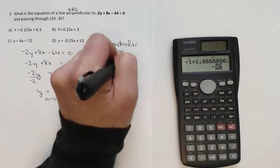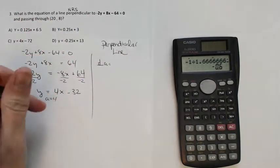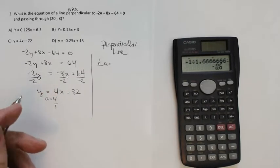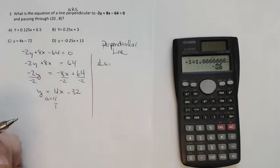Perpendicular slope will be equal to the negative reciprocal. Flip it, put it over 1, flip it, and change the sign. So that would be negative 1 fourth, or negative 0.25.